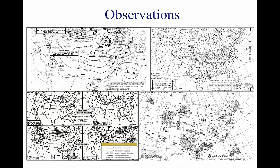Surface Aviation Weather Observations are a compilation of elements of the current weather at individual ground stations across the United States that provide continuous up-to-date weather information. Automated weather sources such as the Automated Weather Observing Systems, Automated Surface Observing Systems, Air Route Traffic Control Center facilities, as well as other automated facilities also play a major role in the gathering of surface observations. Surface observations provide local weather conditions and other relevant information for a radius of five miles of a specific airport.